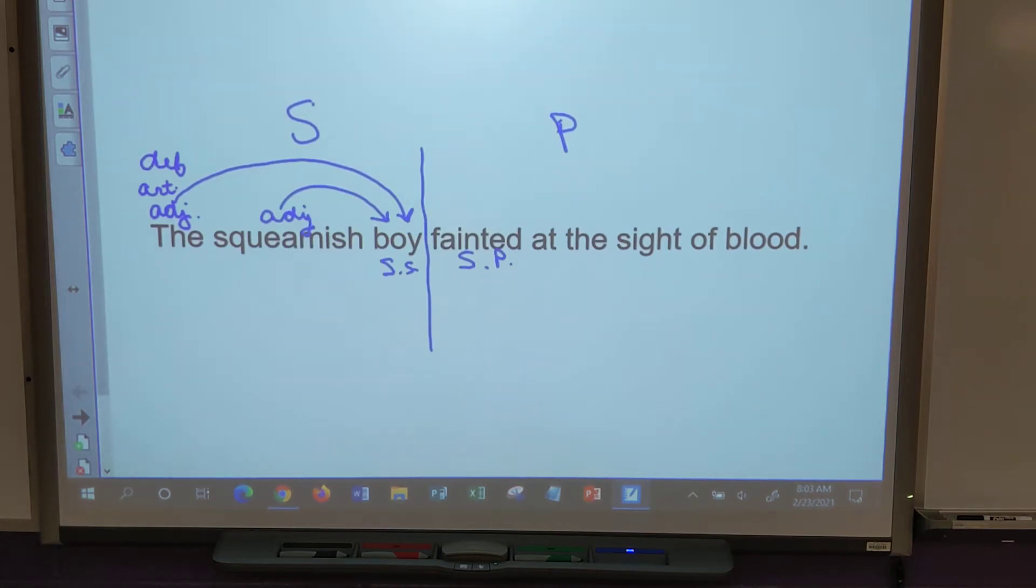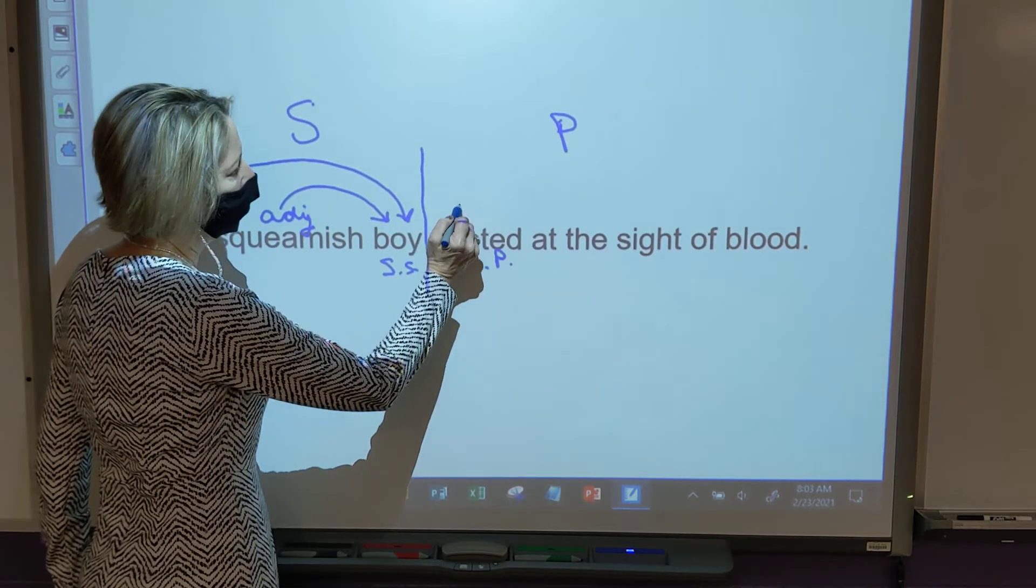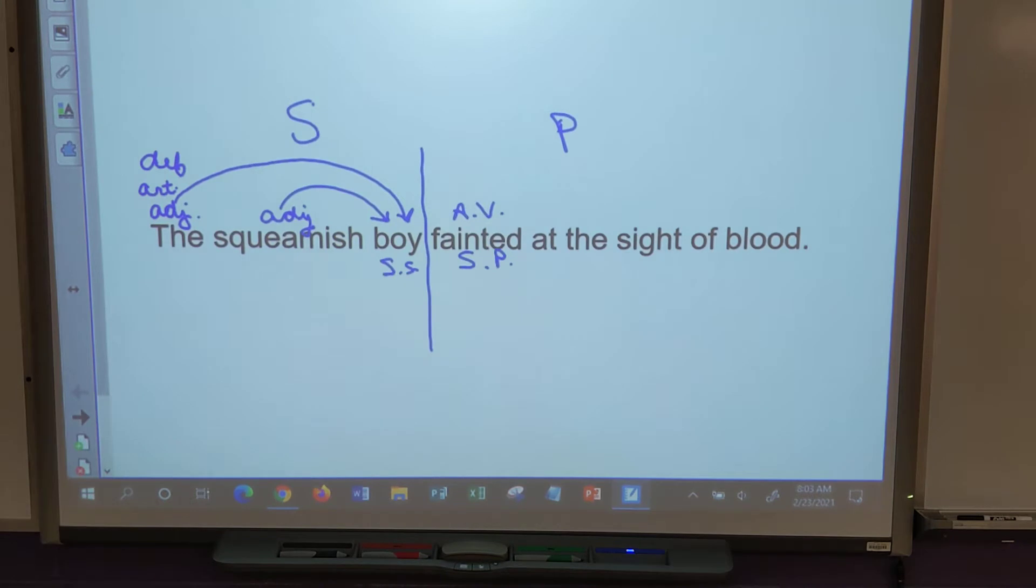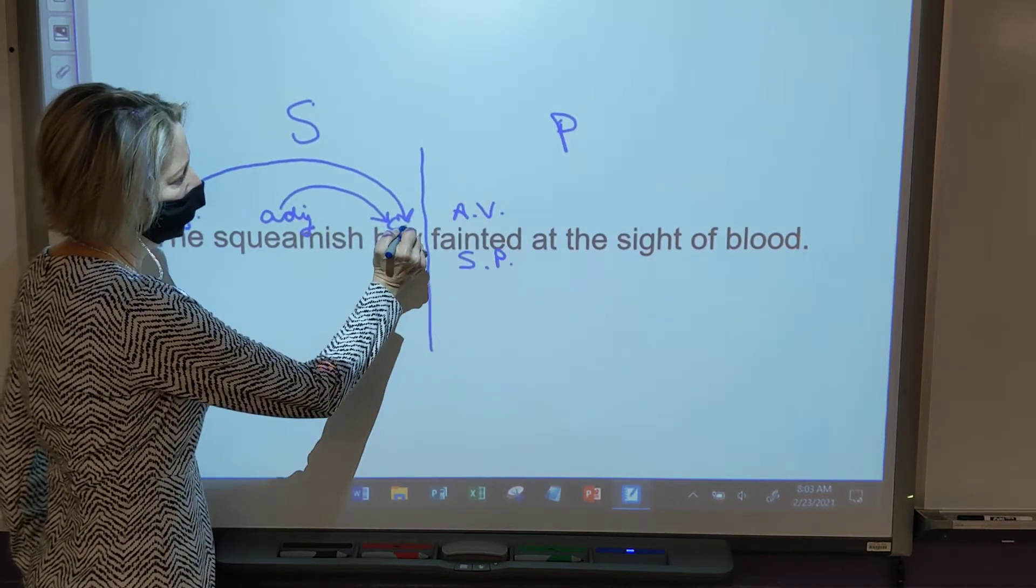Donnie? Fainted is an action verb. Fainted is an action verb. Very good. Ella, not Peter. Clint? Boy is a common noun. Boy is a common noun. Very good.